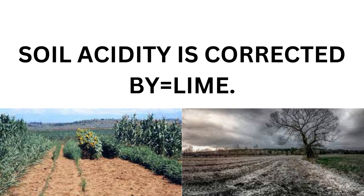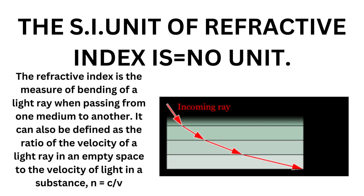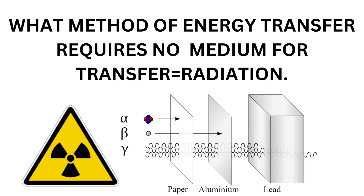Soil acidity is corrected by the addition of lime — when we add lime to the soil, its acidity decreases. The SI unit of the refractive index has no unit. The method of energy transfer that requires no medium is radiation. That's all for today, thanks for watching.